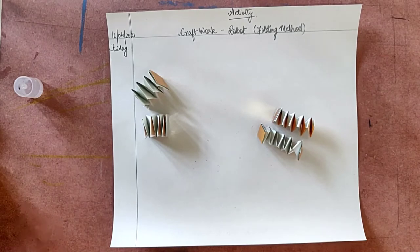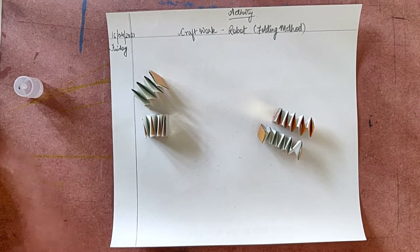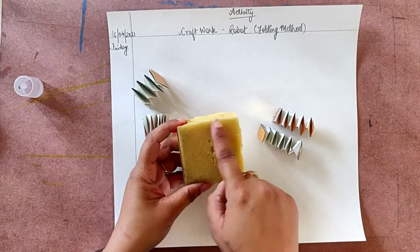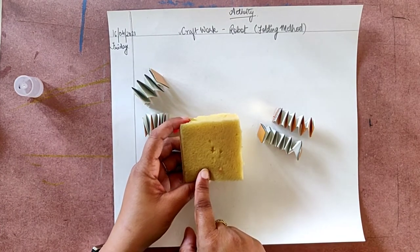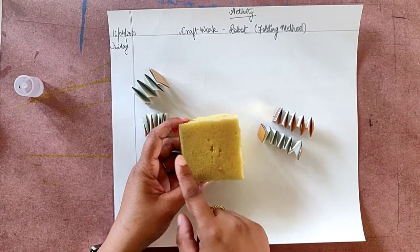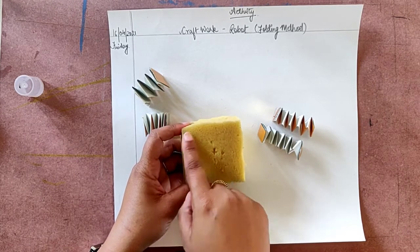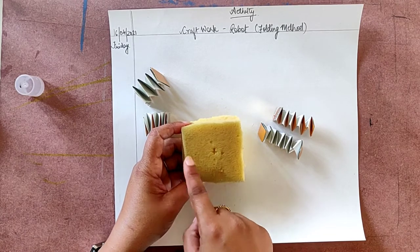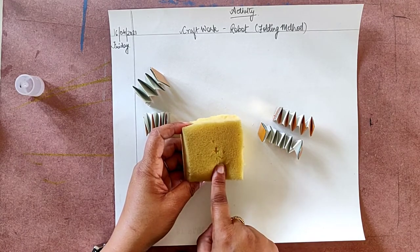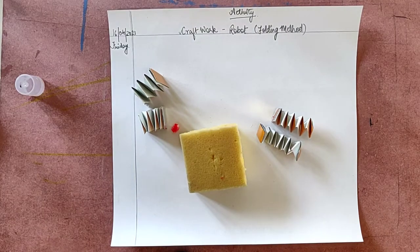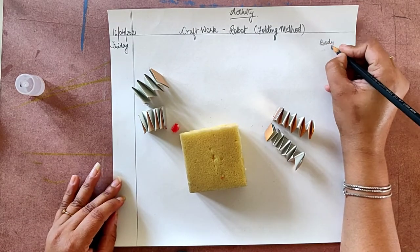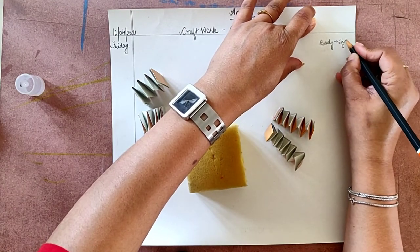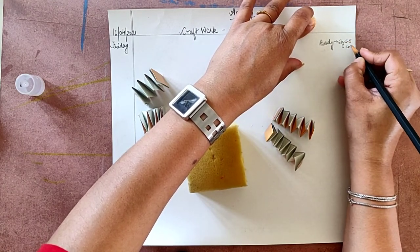Now, let's take a sponge. Here is the sponge. The size of this is 6 by 5.5 cm. The size of this sponge is 6 by 5.5 cm. And this is your body part. I will mention it here.